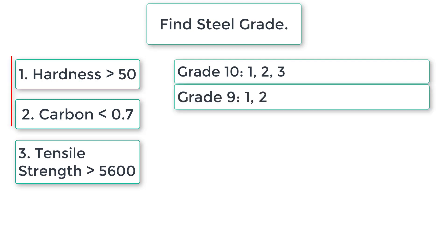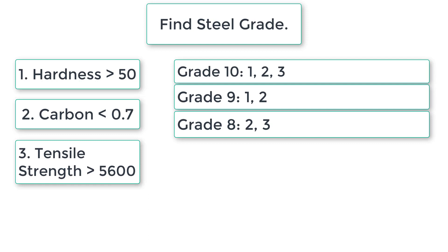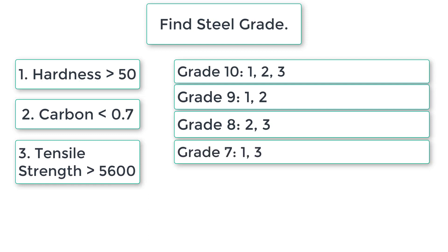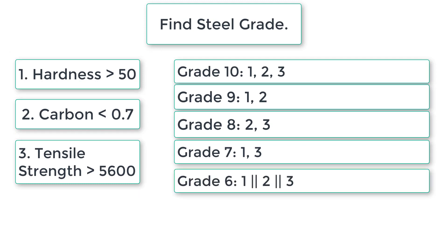For grade 9, the first and second conditions must be true — we will check that using else-if conditions. For grade 8, the second and third conditions must be true. For grade 7, the first and third conditions must be true. For grade 6, either the first, second, or third condition must be true — any one of these conditions must be true.